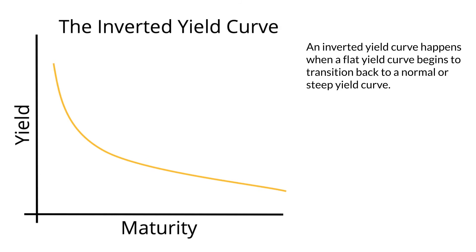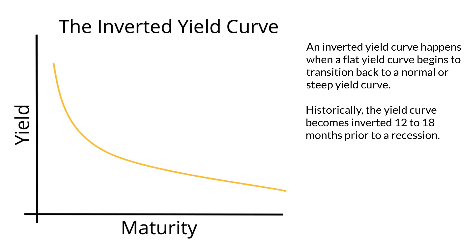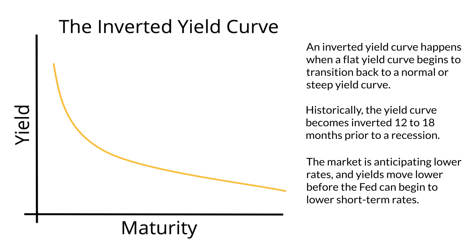An inverted yield curve happens when a flat yield curve begins to transition back to a normal or steep yield curve. It is usually an indication that the market is projecting an economic recession in the near term. Historically, the yield curve becomes inverted 12 to 18 months prior to a recession. This type of yield curve usually indicates investors are anticipating an economic recession in the near term. Usually, the inverted yield curve happens when transitioning from a flat to normal yield curve. When this happens, the market is anticipating lower rates and yields move lower before the Fed can begin to lower short-term rates.